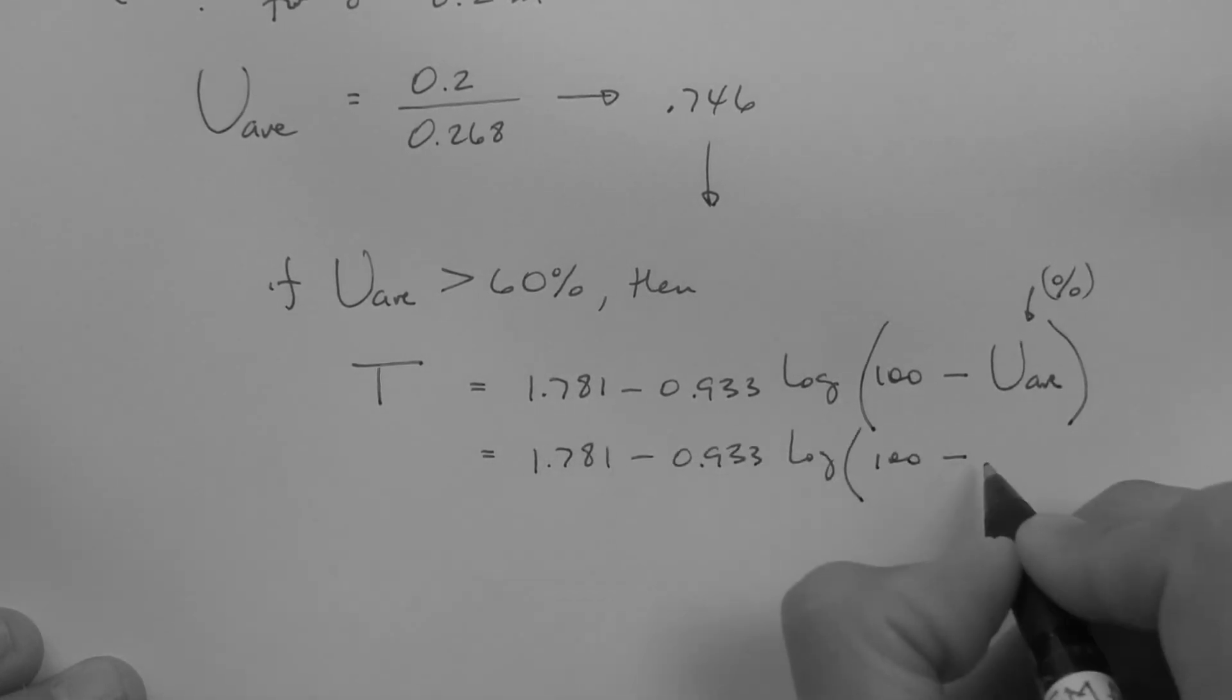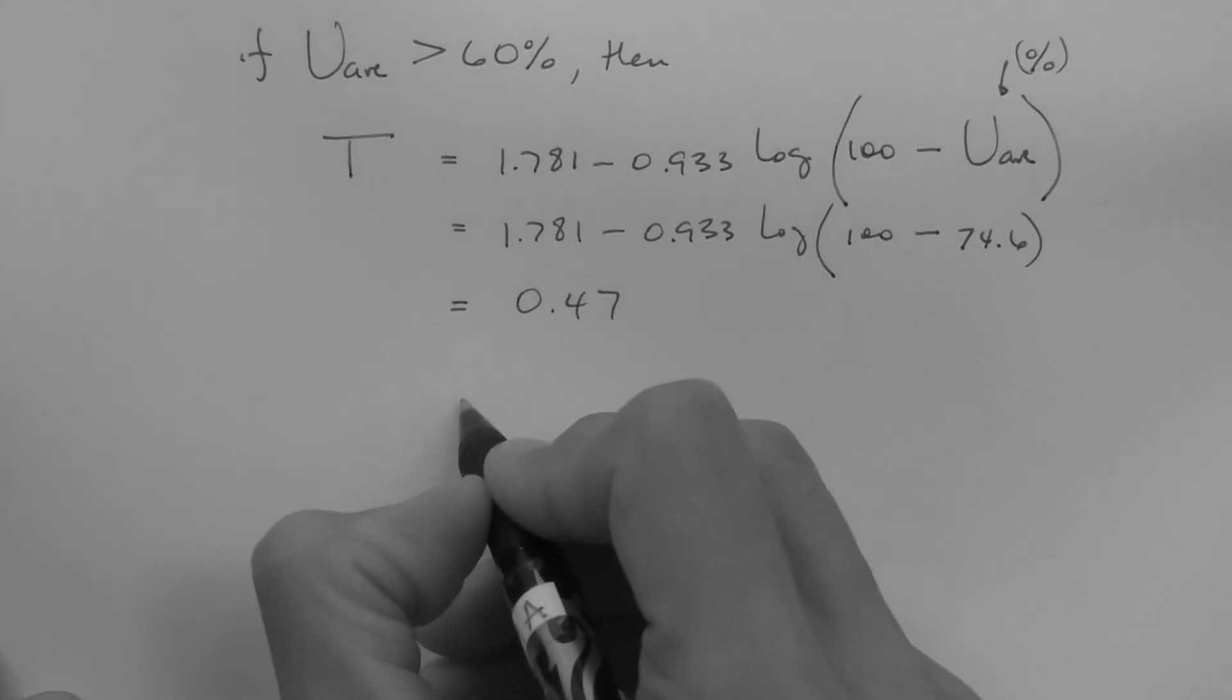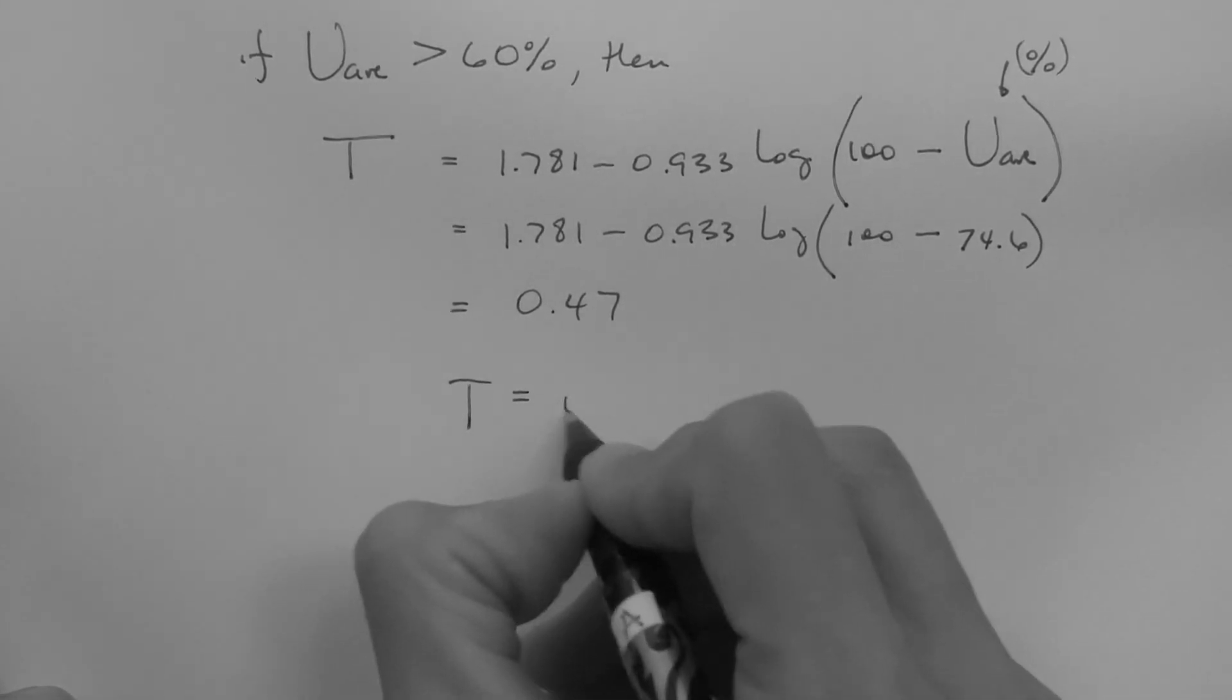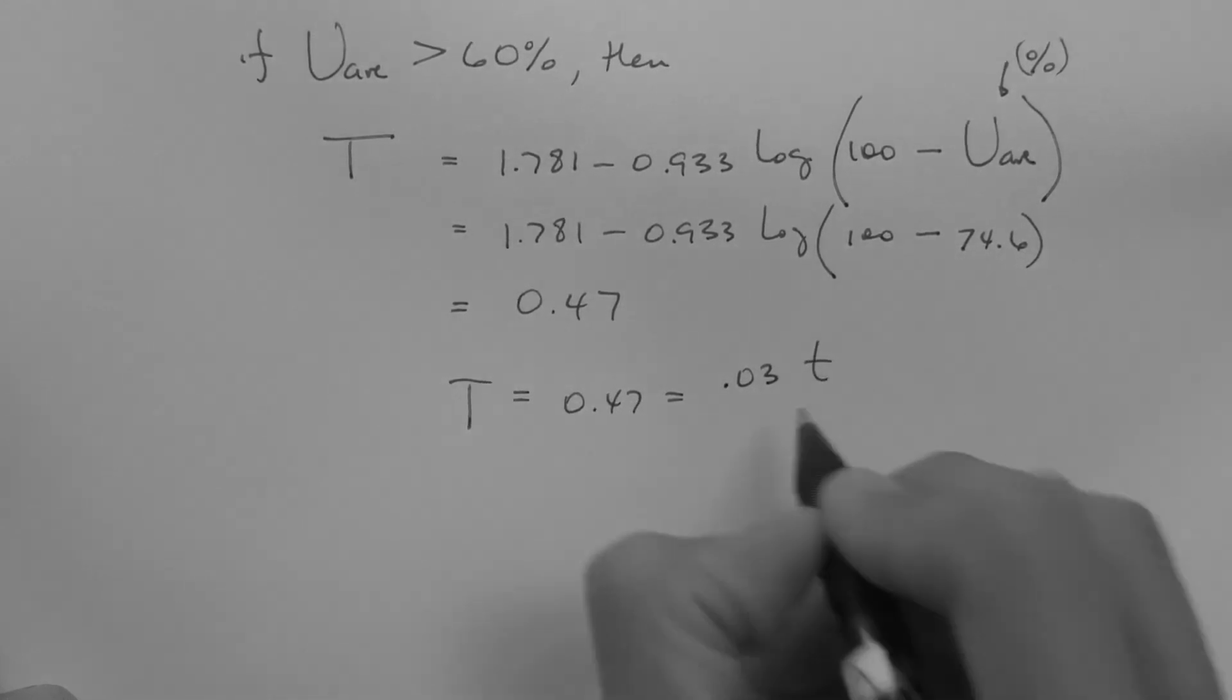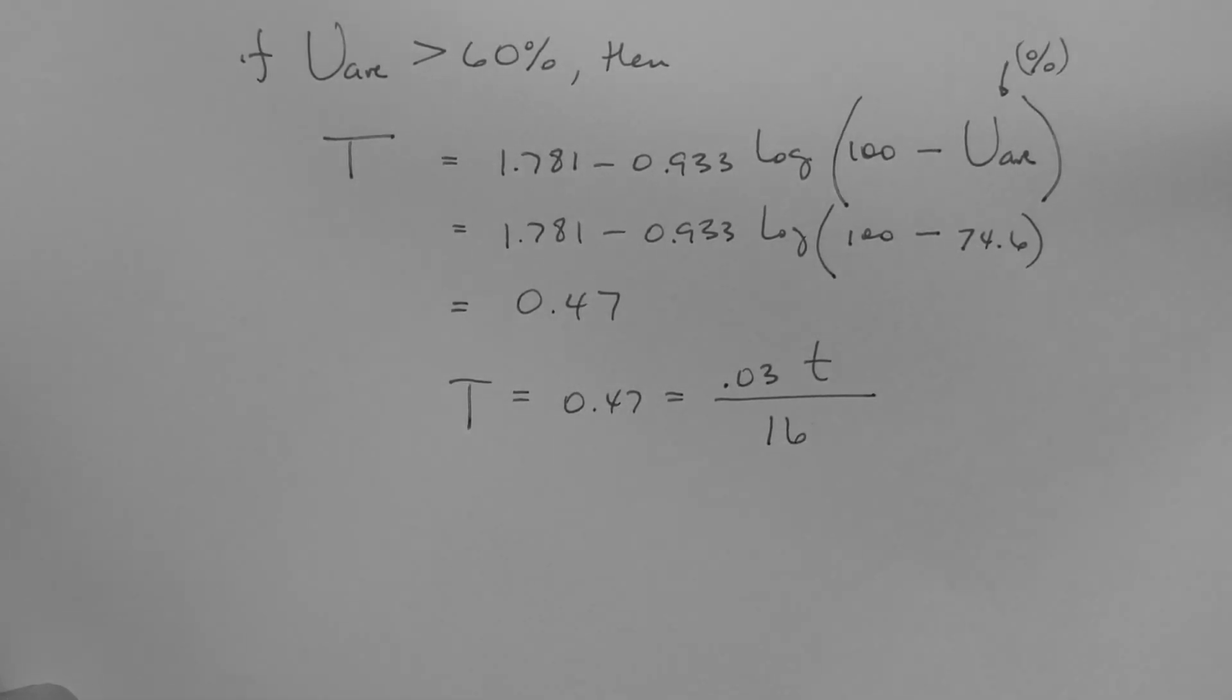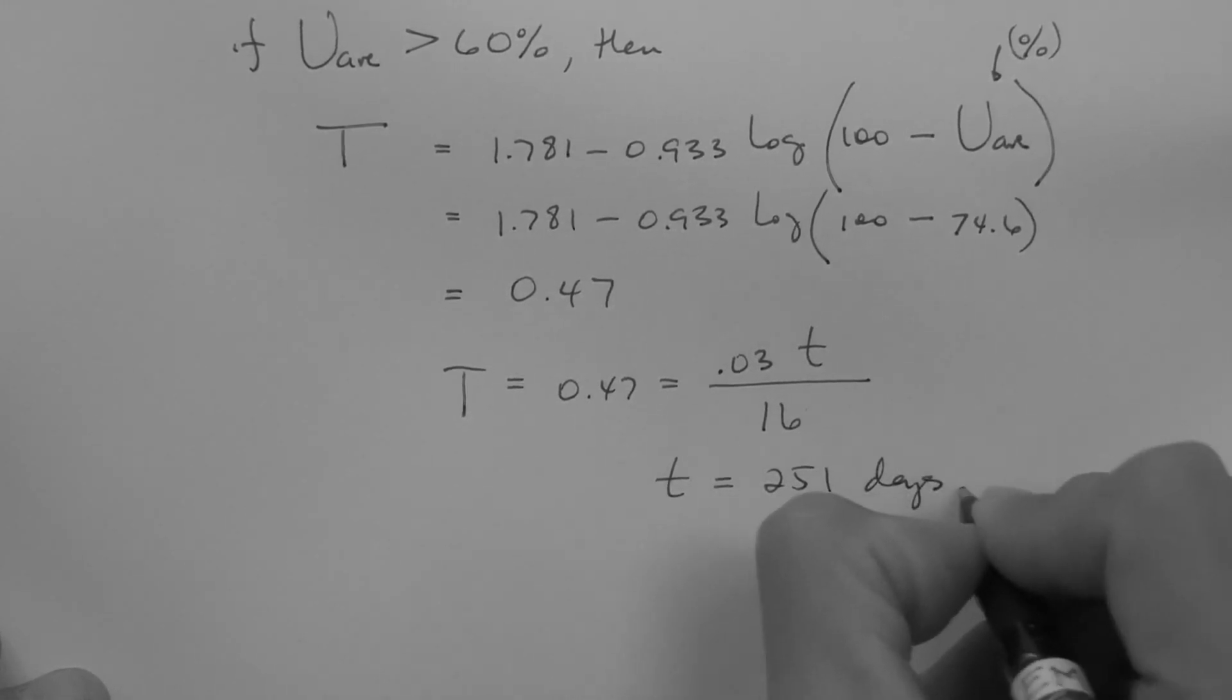So for our problem, the time factor is equal to CV times T divided by HDR squared. 251 days.